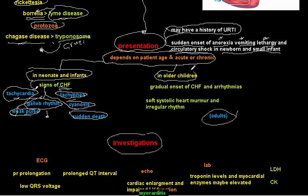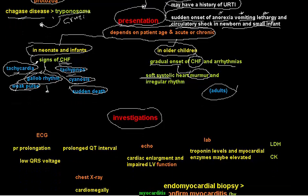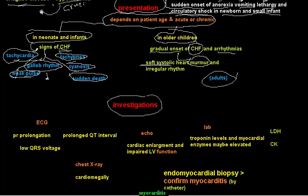In older children, signs and symptoms of congestive heart failure are present but have a more gradual onset. Arrhythmias may also be heard. A soft systolic murmur is typical in older children, along with a gallop murmur. The presenting symptoms include anorexia, vomiting, lethargy, tachycardia, tachypnea, weak pulse, and gallop rhythm.